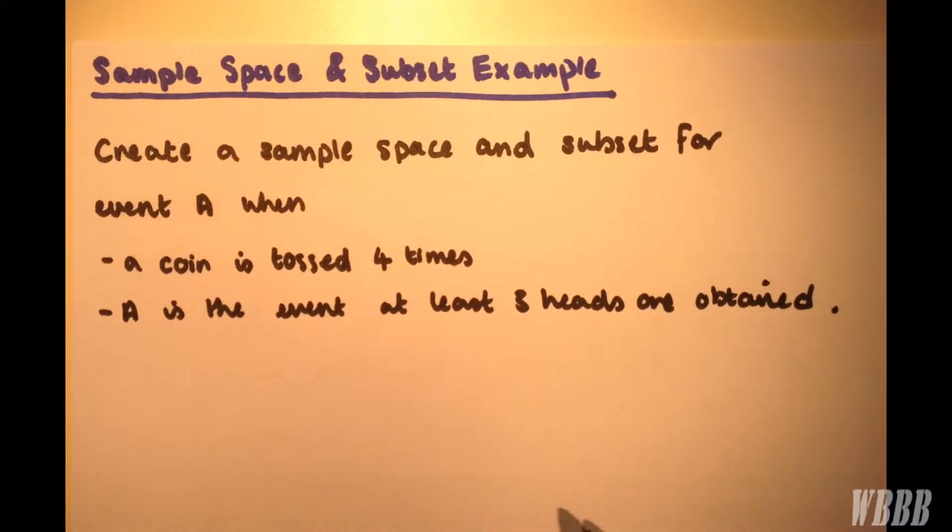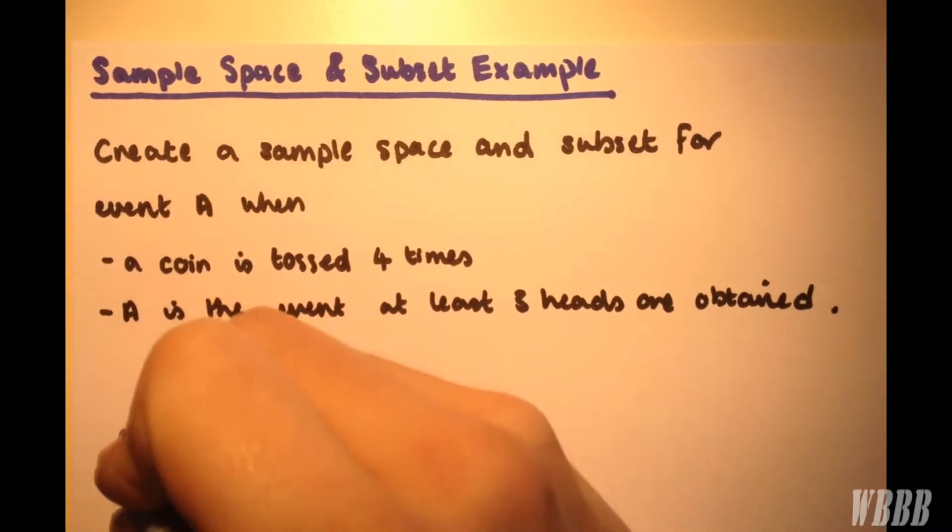So a sample space is simply a way of listing all possible outcomes from doing something. So we'll call our sample space omega.